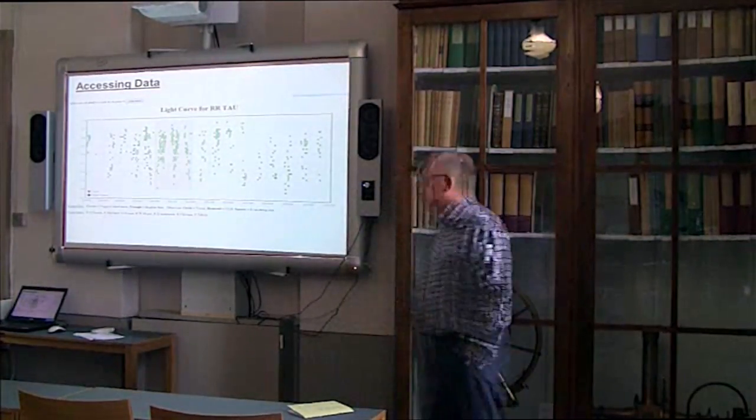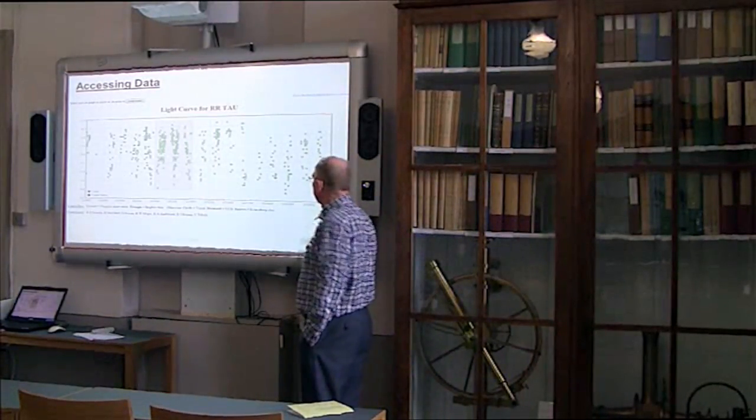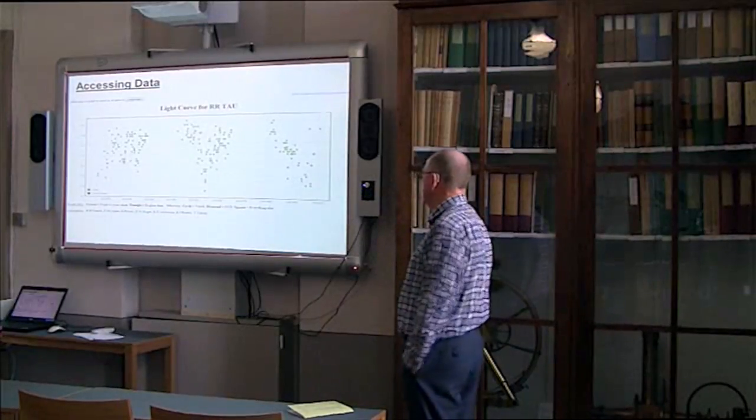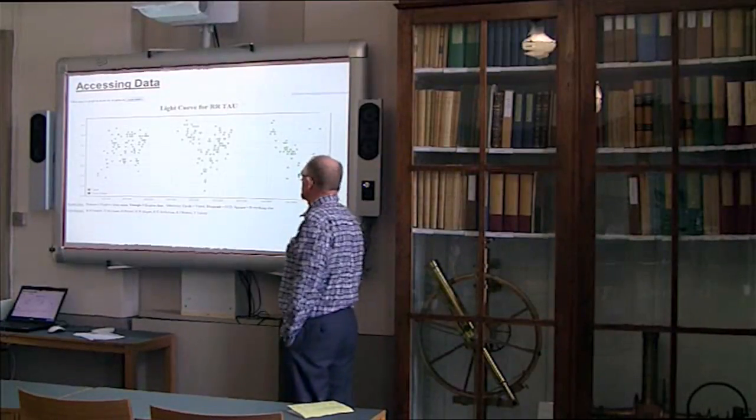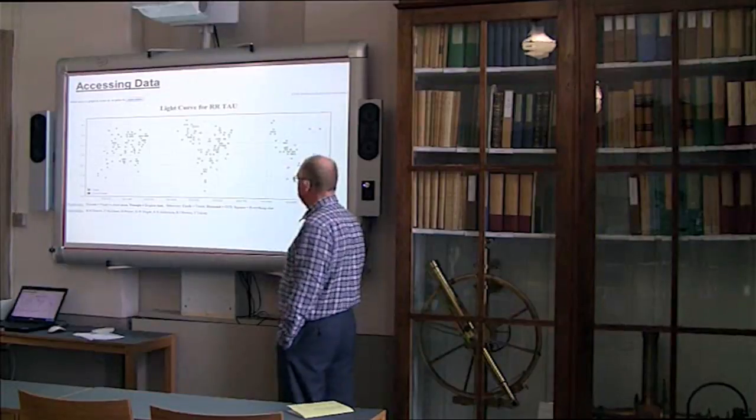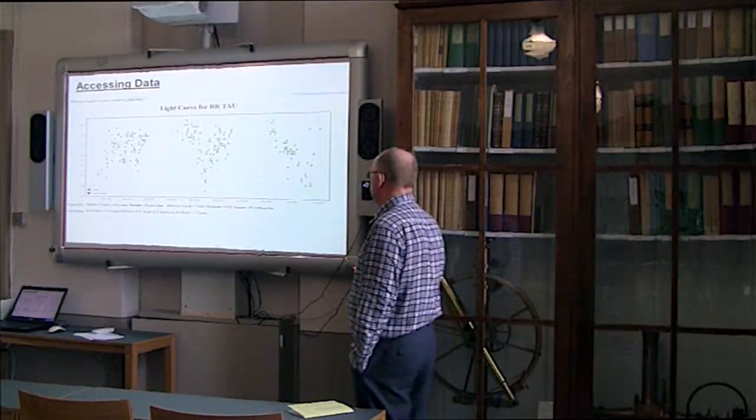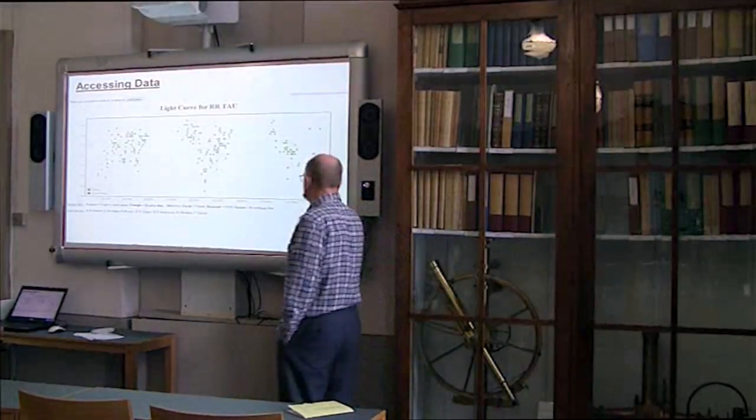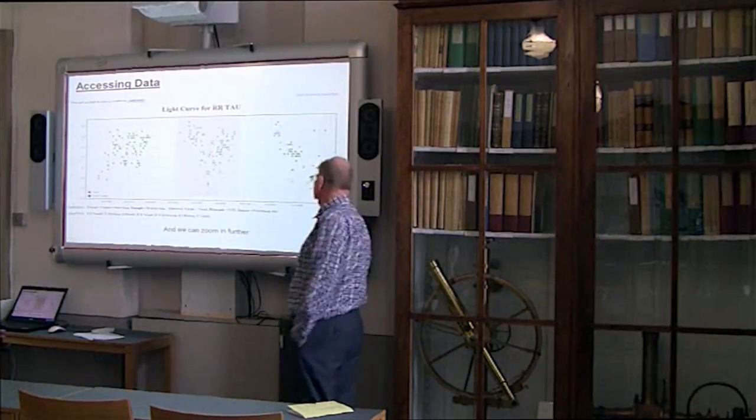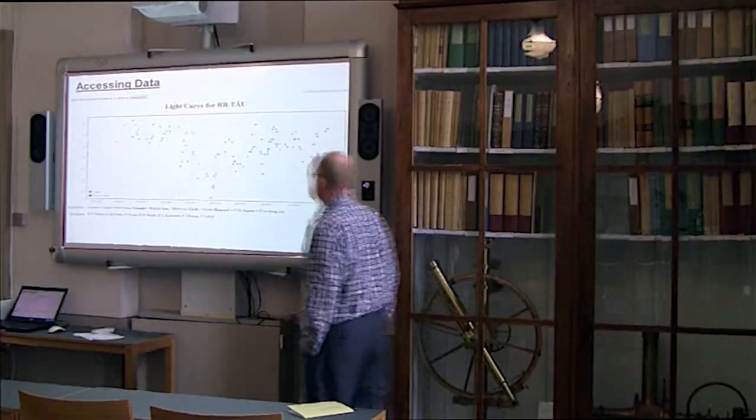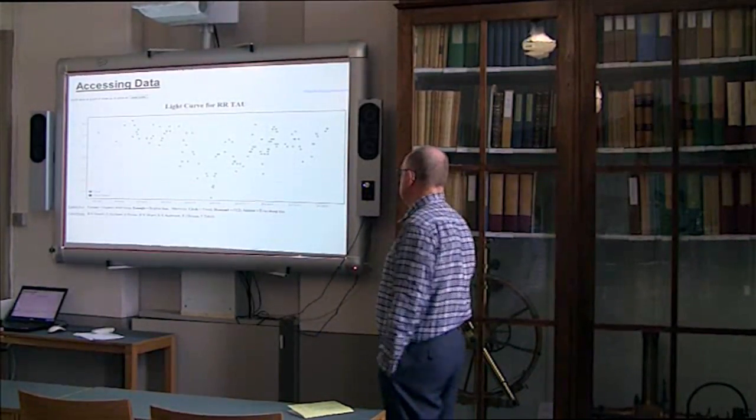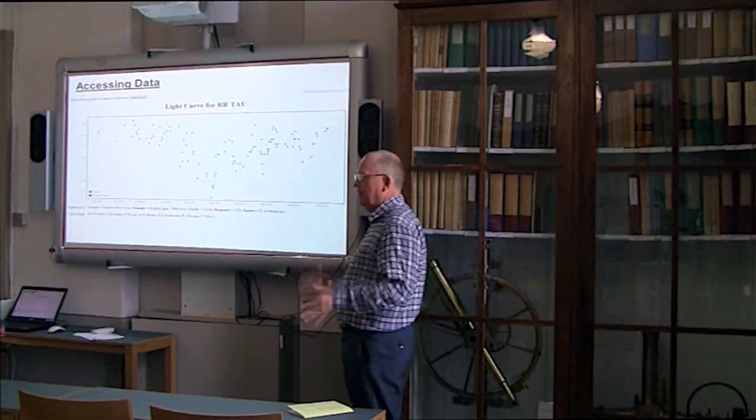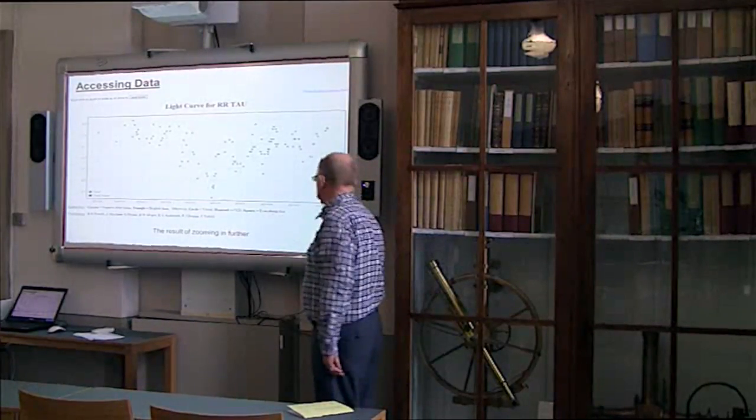We want to go into a particular section of the light curve. This can be selected and zoom in. It gives details of negative observations. Crosses are visual, and diamonds are CCD. The results of zooming in. We can zoom in further. So it enables you to look in detail at a particular part of the light curve.